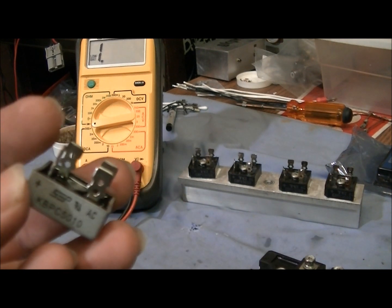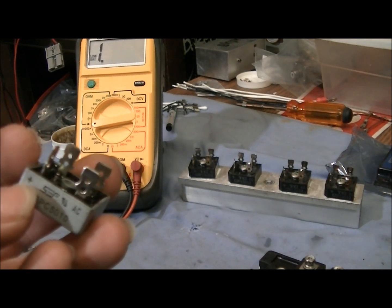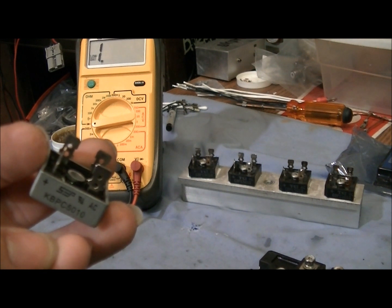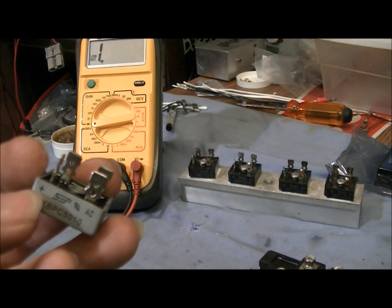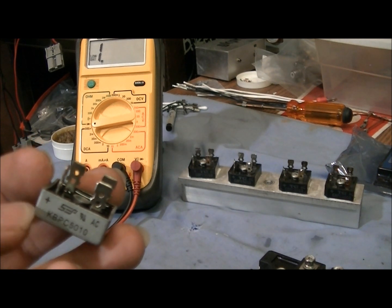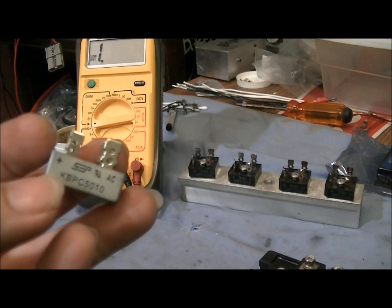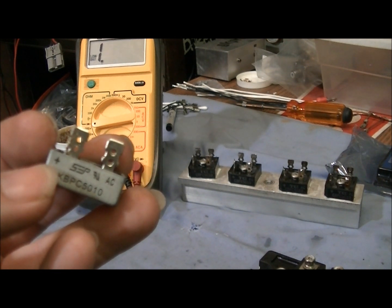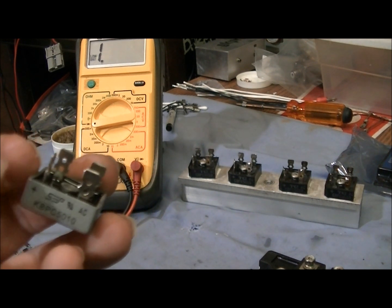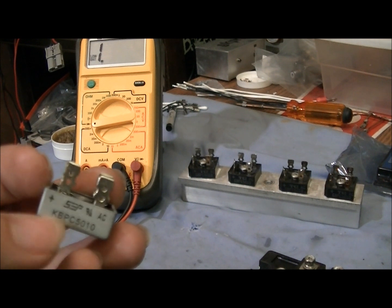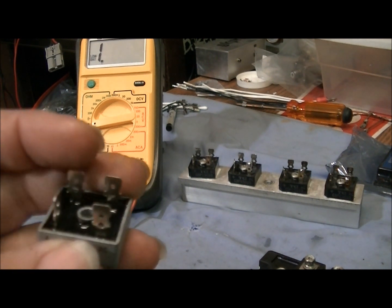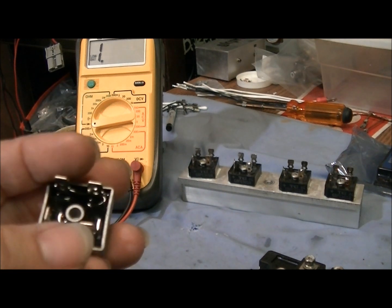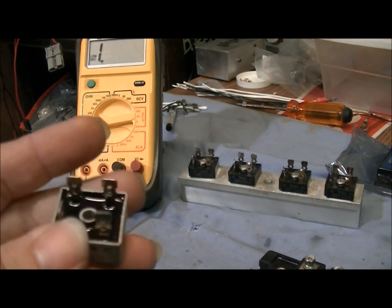If you look on your bridge rectifier you'll see a positive. Different bridges can be different. They could be switched around, but on this particular one as you can see we have positive here, AC here. They're always going to be diagonal from each other. So if this is positive, diagonal this way is negative. If this is AC, diagonal this way is AC.